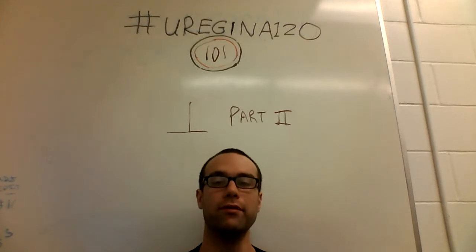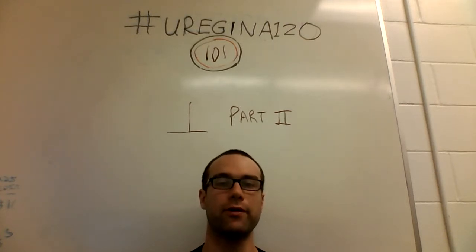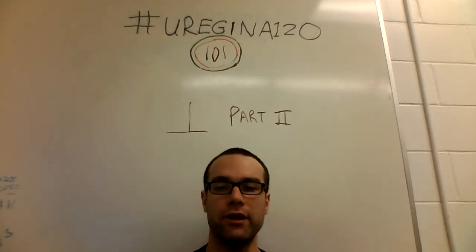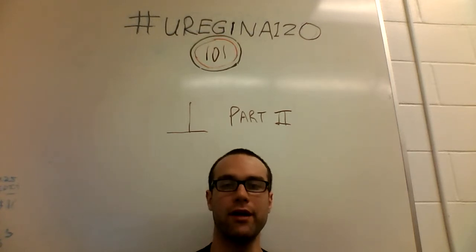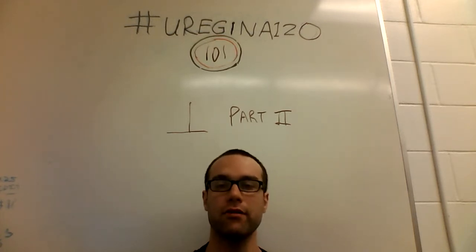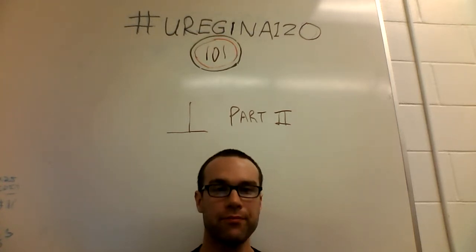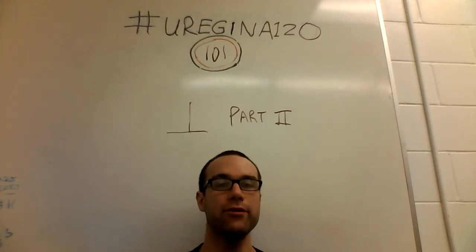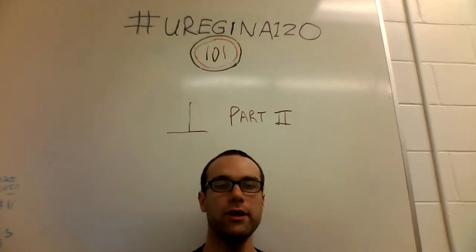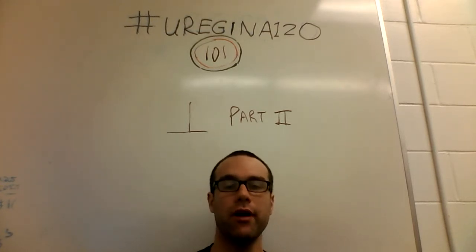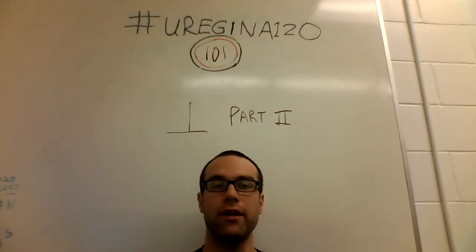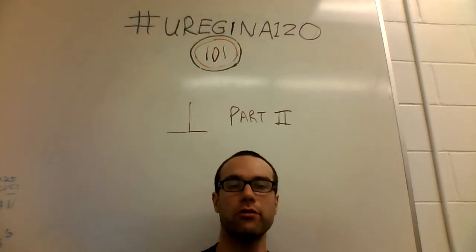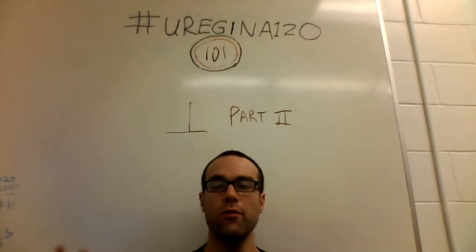We've already had one video on the argument from contradiction. If you haven't seen that video, go watch it because this is kind of a continuation of that discussion. But the idea here is that if you can prove a contradiction in your system, you need to reconsider one of your assumptions in your system, as described in that video, in order to regain consistency.